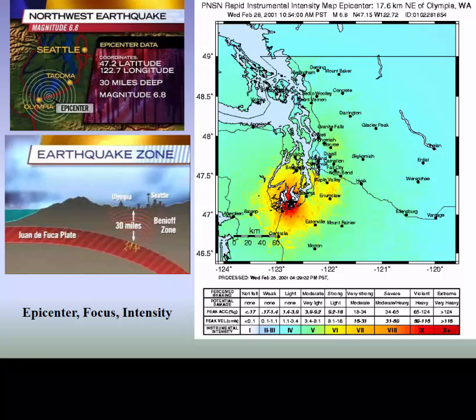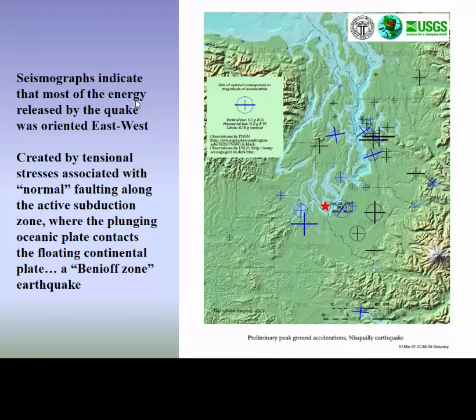This occurred February 28, 2001 — an earthquake down near Olympia, Washington. In Virginia we had one in 2011, and that was nowhere near a plate boundary. You can see those near plate boundaries and others outside of plate boundaries. This one was about 30 miles deep, with a magnitude of 6.8. Since the scale is logarithmic, it was either 10 or 100 times larger than the one that occurred in Virginia.